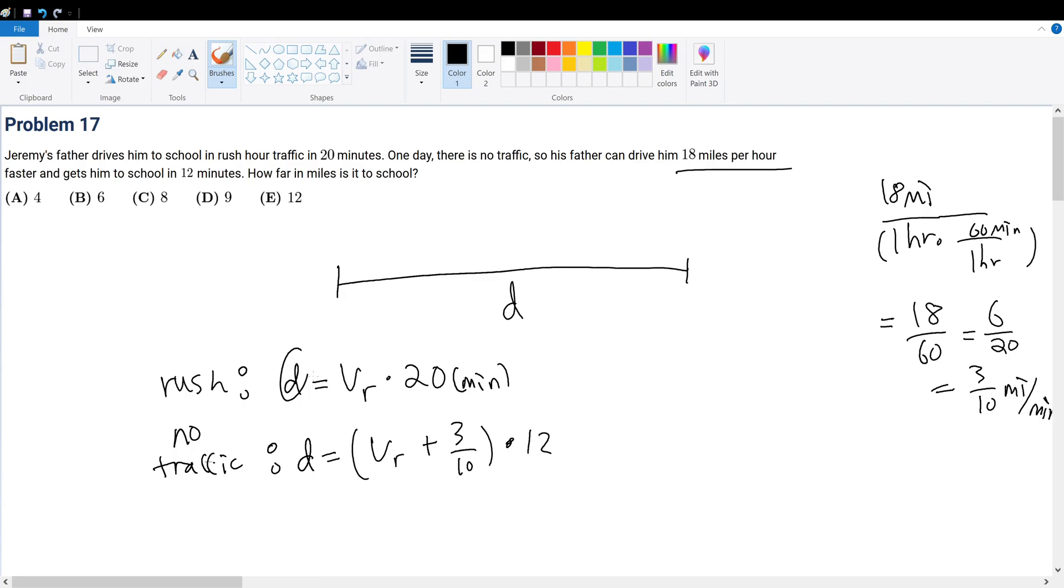So since this and this are the same D, this right here will be equal to this expression right here, which means that 20Vr is equal to 12Vr plus 36 over 10.